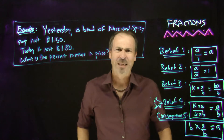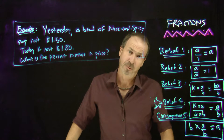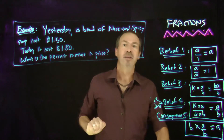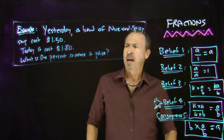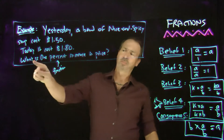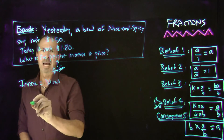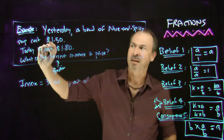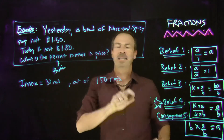Percent increase — these sorts of questions always make me nervous. I've got to make sure I really know what I'm talking about. First of all, there definitely was an increase in price — I went from $1.50 to $1.80, up 30 cents. But they want the percent increase, not the actual increase. Remember, a percent is just a fraction with denominator 100. So the question is better read as: what is the fraction increase in the price? The actual increase was 30 cents, and that was out of the starting price of $1.50 — or thinking in cents, 150 cents.